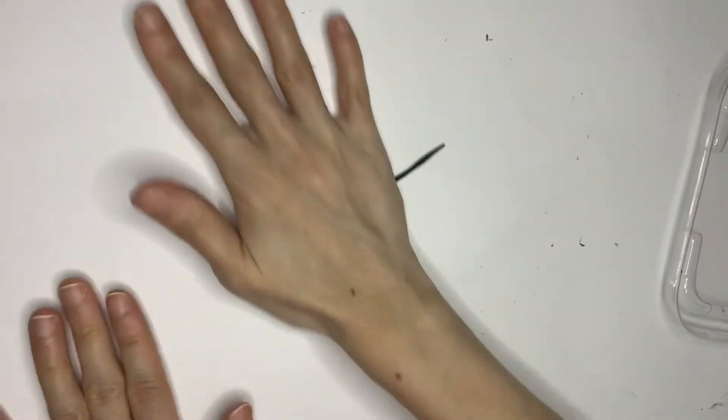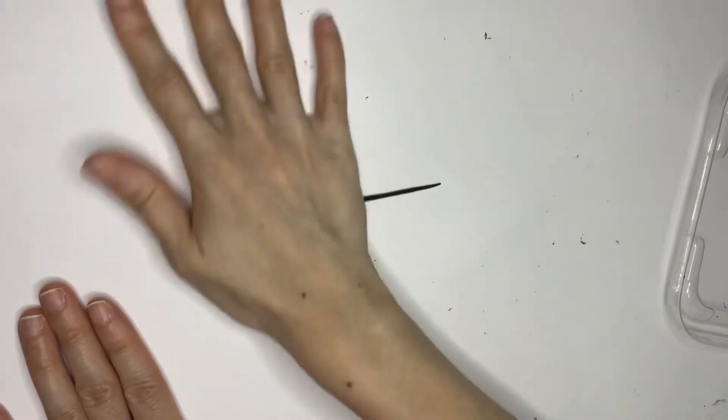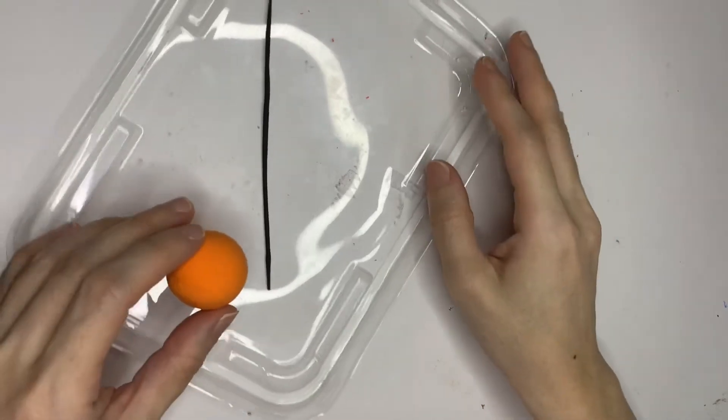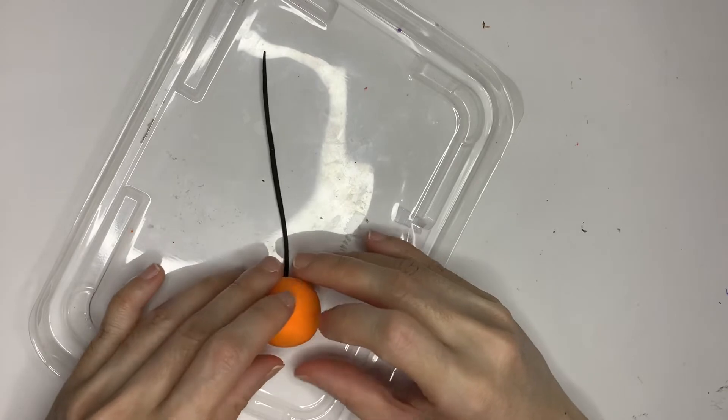Now we are going to put up the first line for the ball. Put the ball straight on top of the line and roll one circle.